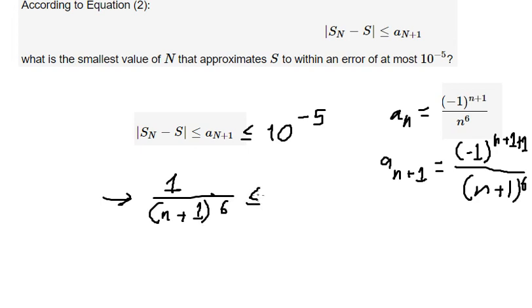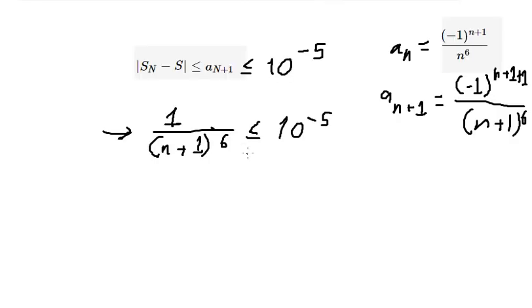It is smaller than or equal to 10 to the power of negative number 5. So we put this one go to the left and this one go to the right.